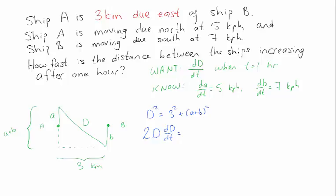3 squared is a constant, so it drops out. With (A plus B) squared again, we can chain rule. If A plus B were my variable, my derivative would be 2(A plus B), but it's not, so I have to multiply by the derivative of A plus B. And since t is my variable, that's dA/dt plus dB/dt.